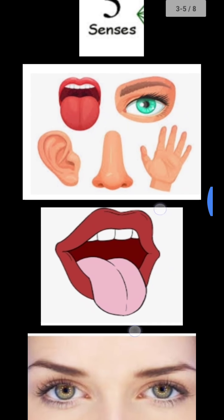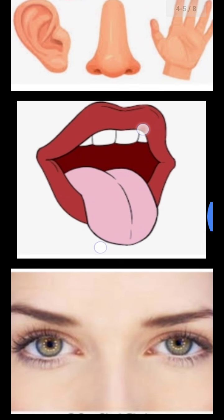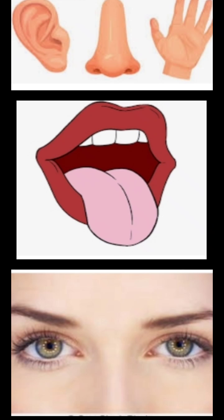First of all, tongue. It is also called sense of taste. With the help of it, we can take the taste of things or food. Tongue ki help se hum kisi bhi chiz ka swaad asani se le sakte hain, aur us chiz ko identify kar sakte hain ki is ka swaad kaisa hai — acha hai ya kharaab hai.